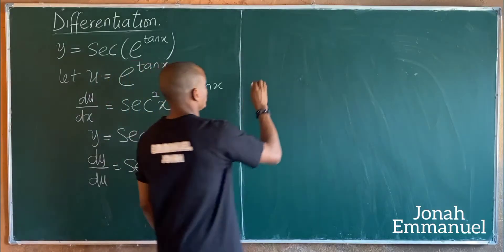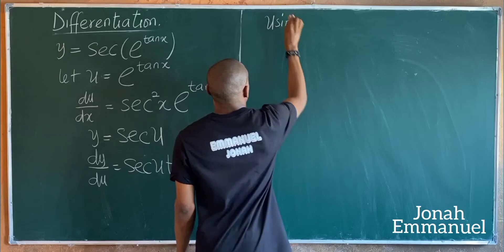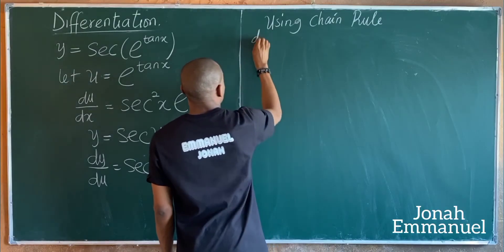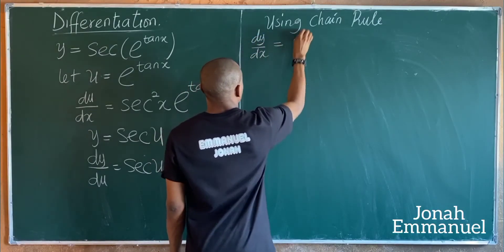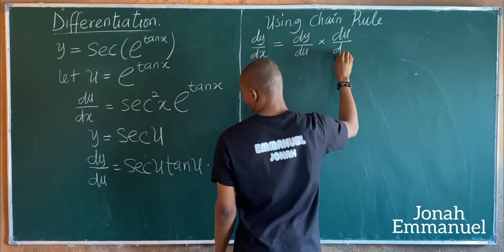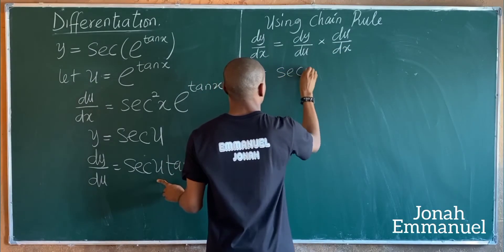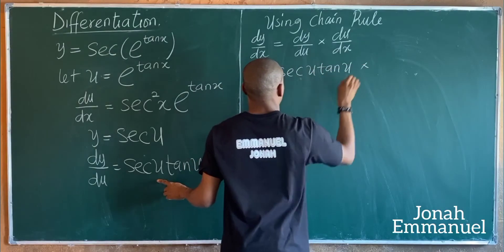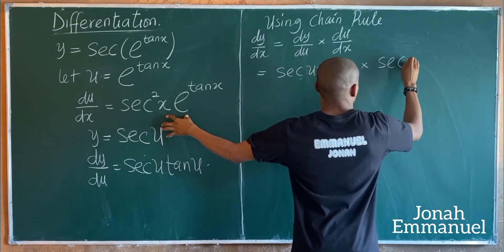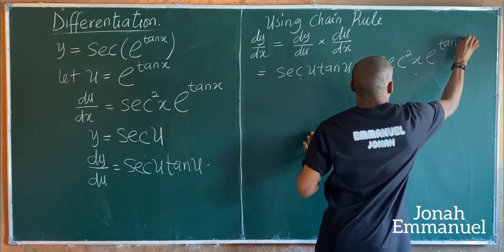Using chain rule: dy/dx equals dy/du times du/dx. This equals sec u times tan u, times sec squared x times exponential tan x.